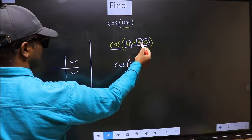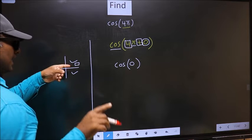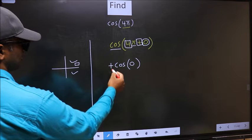Here we have plus. So the angle lies in 1st quadrant. And in the 1st quadrant, cos is positive. So you should put plus.